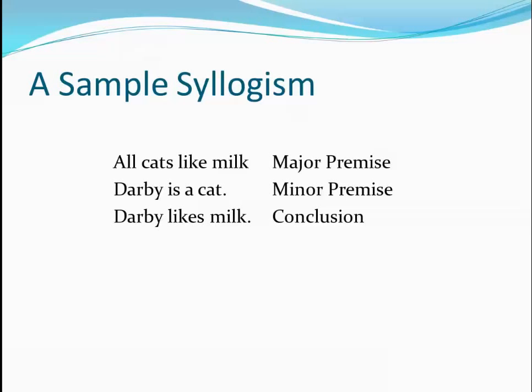The definition given here is the definition for the standard form of syllogism. This is an example of a standard form syllogism, which is composed of two premises and a conclusion. The first premise is called the major premise, the second the minor premise, and the third the conclusion.